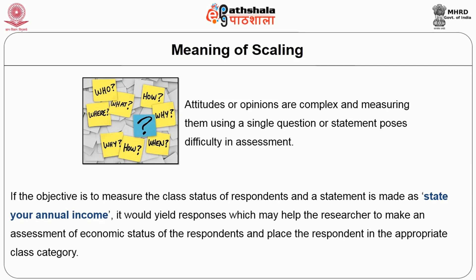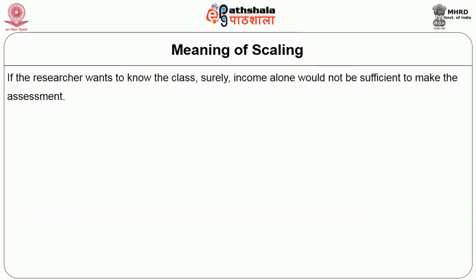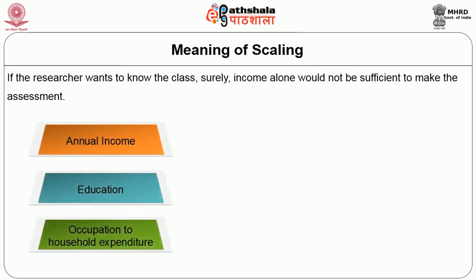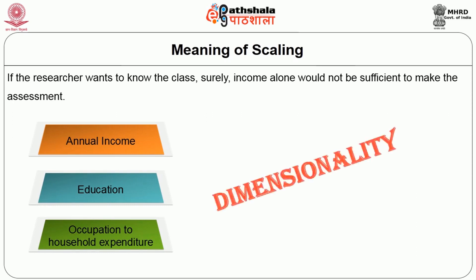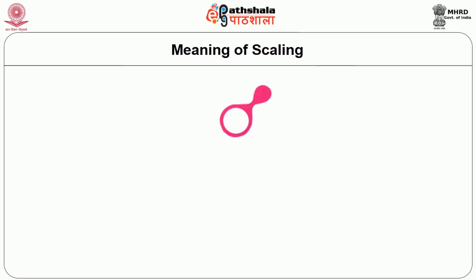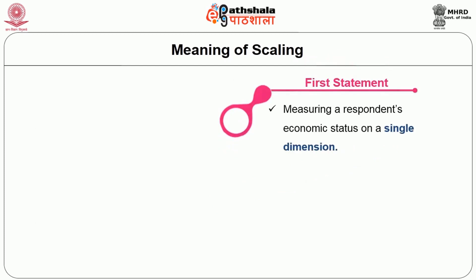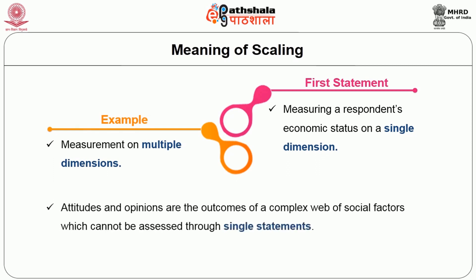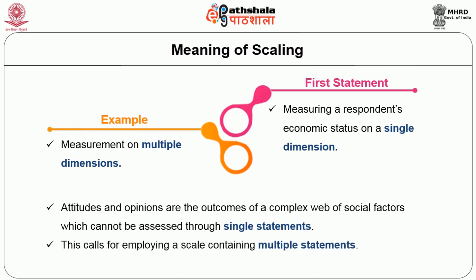However, if the researcher wants to know the class, income alone would not be sufficient. Hence, a set of statements ranging from annual income, education, and occupation to household expenditure may yield near sufficient information to place the respondent in the appropriate class category. This leads us to an important aspect of scaling — dimensionality. The first example refers to measuring on a single dimension, while the latter refers to measurement on multiple dimensions. Attitudes and opinions, being outcomes of a complex web of social factors, call for employing a scale containing multiple statements.